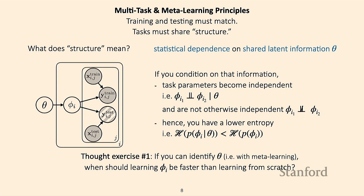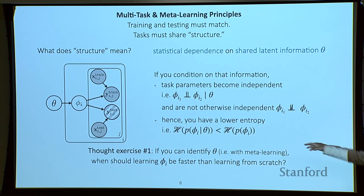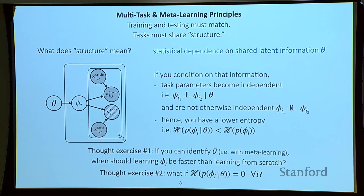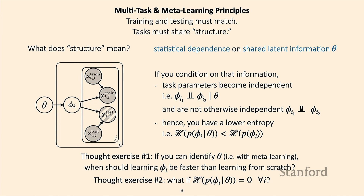If the tasks share structure, theta will help reduce your uncertainty over phi. Whereas if the tasks are completely independent and don't have any shared structure, you won't actually be reducing entropy when you condition on theta. Another case: if you condition on theta and the entropy is zero, that means theta tells you everything about the task-specific parameters — you don't need any support set to infer them. In this case, you could think of this as memorization: the meta-learning algorithm may just memorize all the tasks and not actually use the support set.